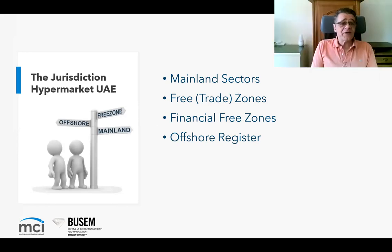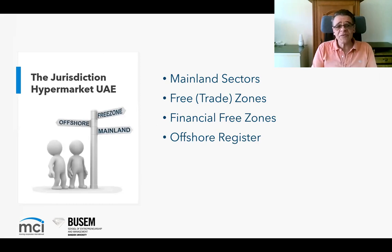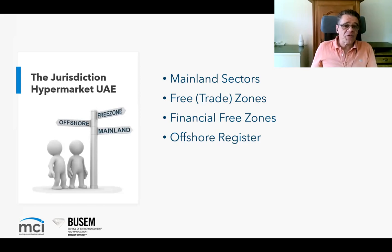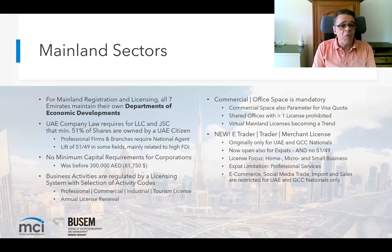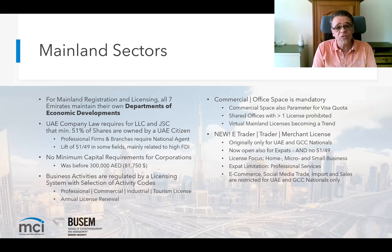The next chapter is what we call the 'jurisdiction hypermarket UAE,' because it is one of the rare countries in the world where you have mainland sectors, free zones, financial free zones, and even offshore registers all in the same country. Most countries have two elements at most, sometimes three, but four is very rare. Let's start with the mainland — the domestic economic jurisdiction, strictly organized on emirate level, where each of the seven emirates maintains its own independent Department of Economic Development for company registration and licensing.